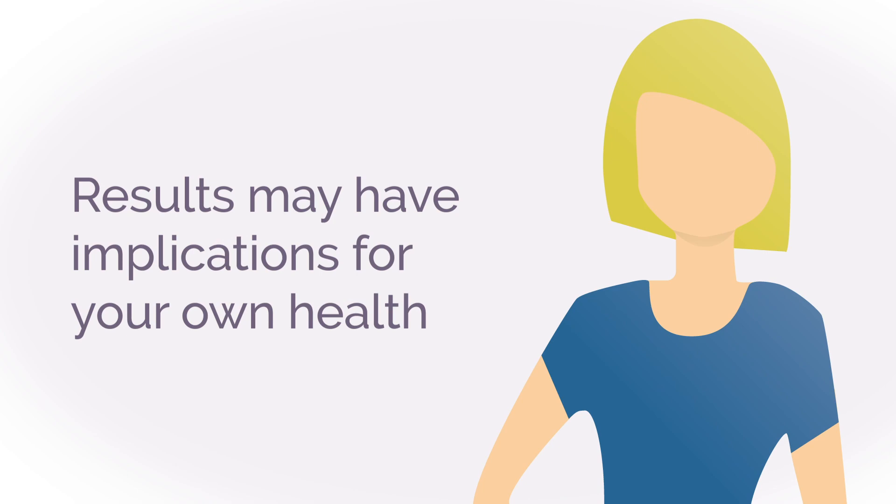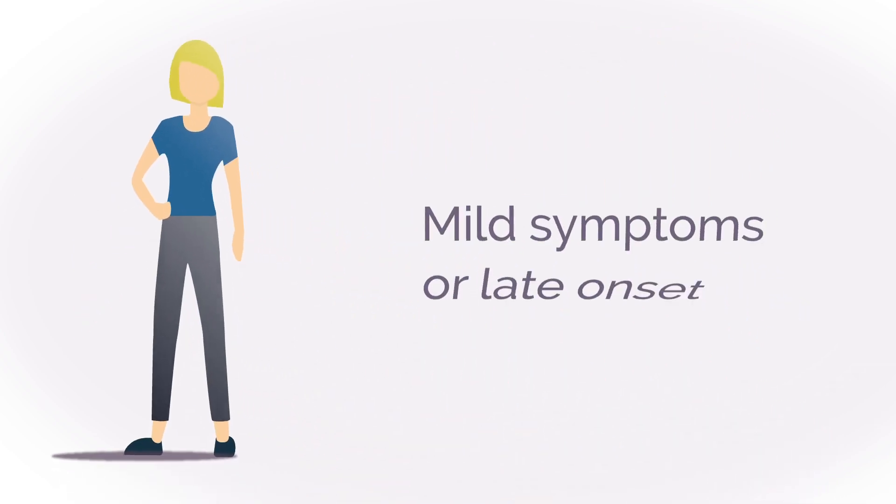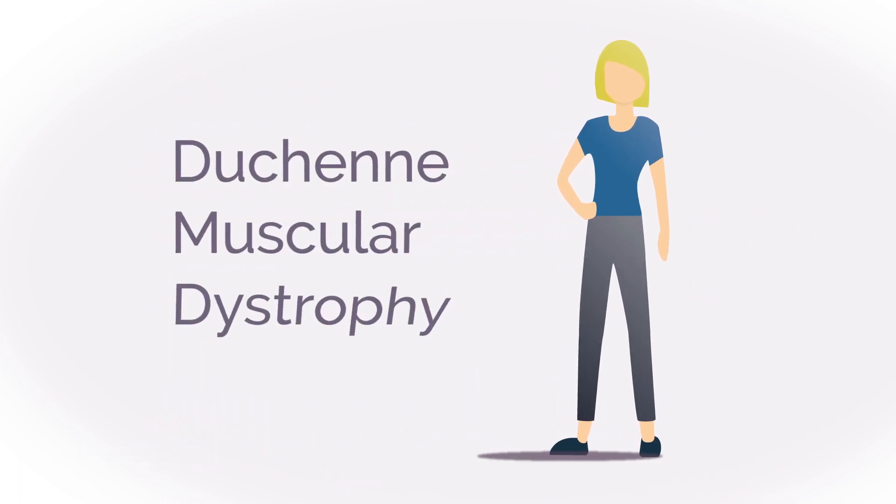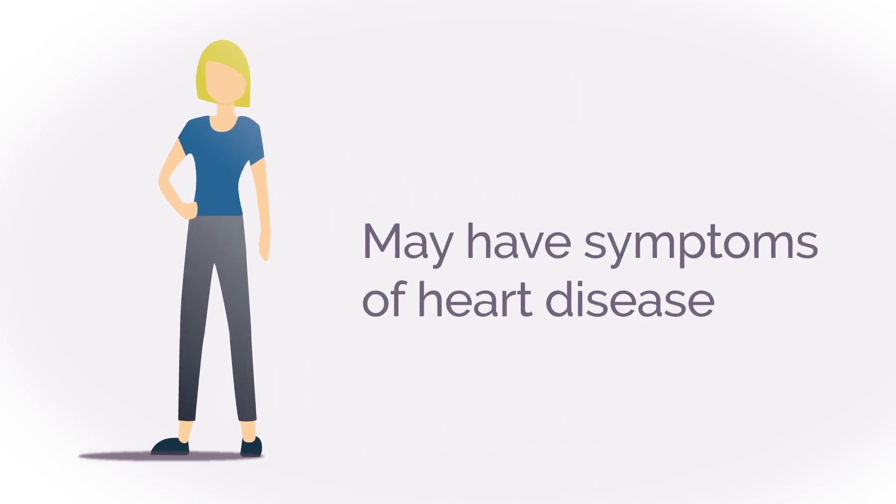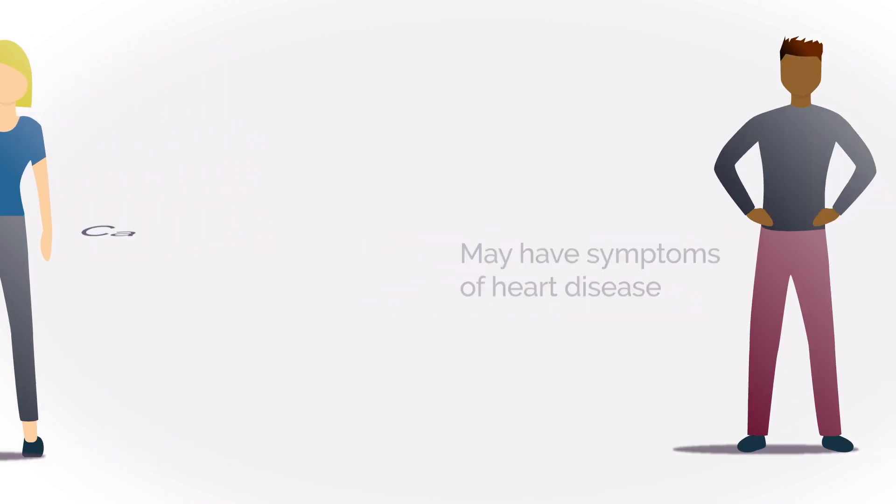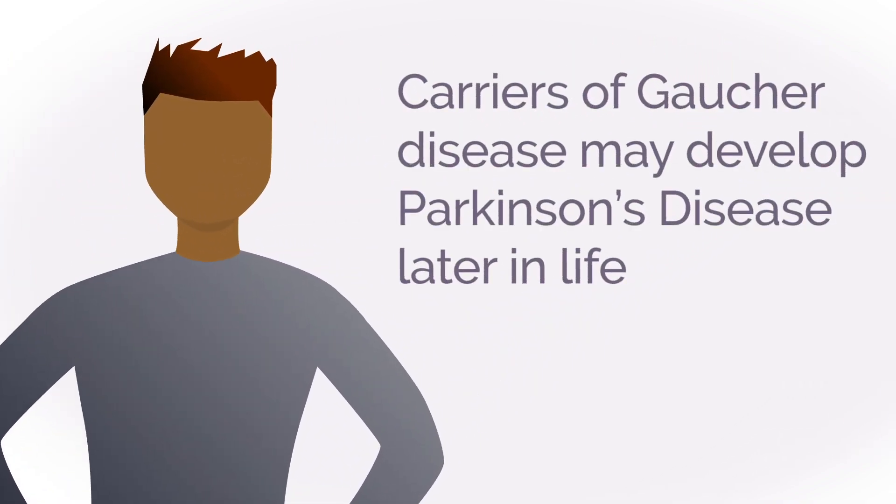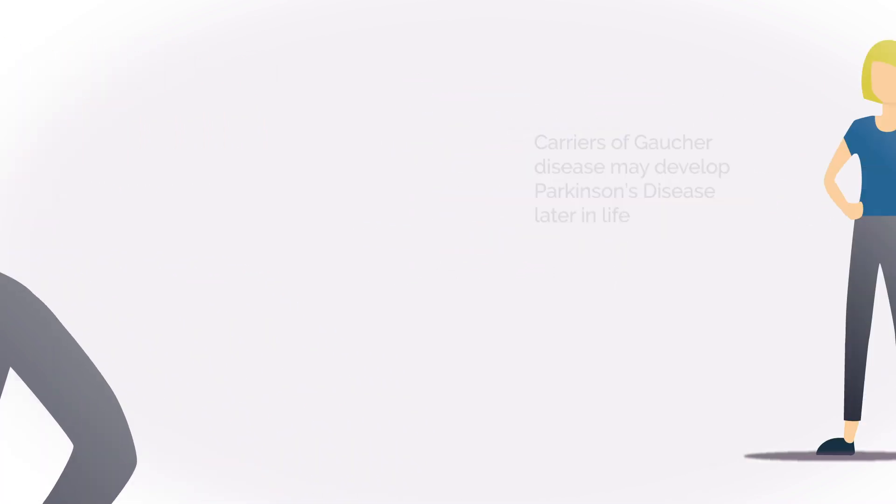Results may have implications for your own health. You may learn that you are affected with a condition that has mild symptoms or a late onset. For example, women who are carriers of the X-linked condition Duchenne muscular dystrophy may have symptoms of heart disease. In rare cases, carriers may exhibit clinical symptoms. For example, some carriers of Gaucher disease may develop Parkinson's disease later in life.